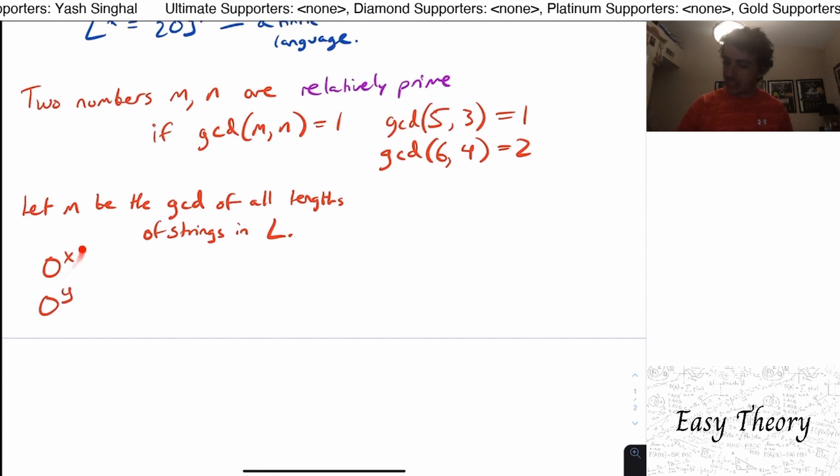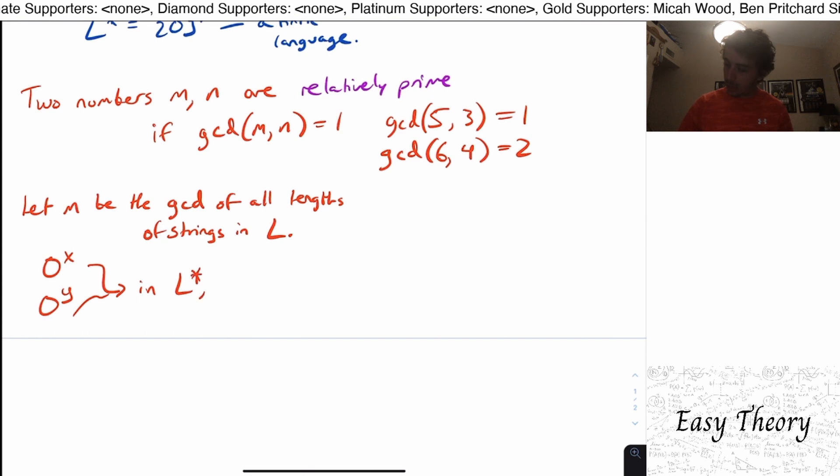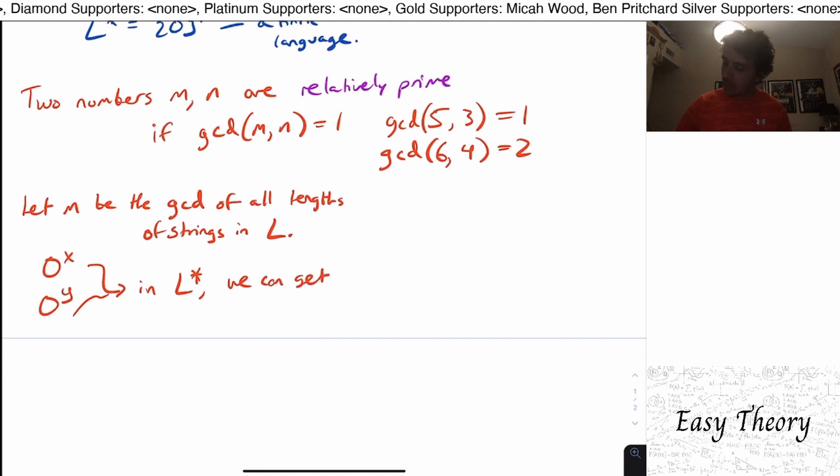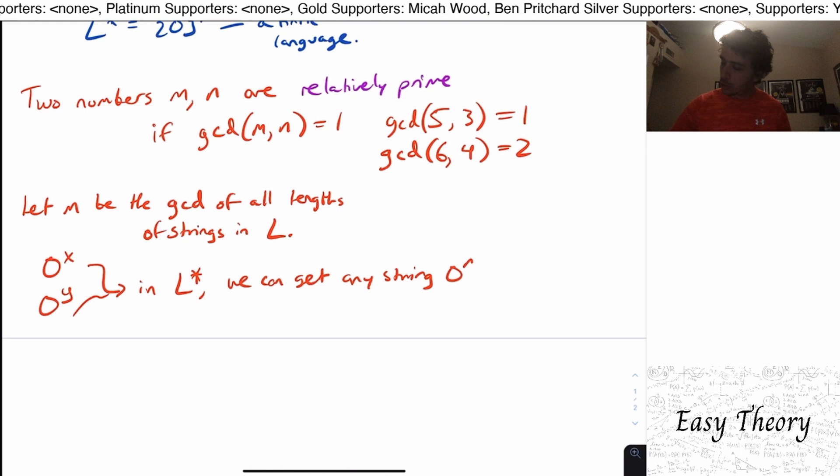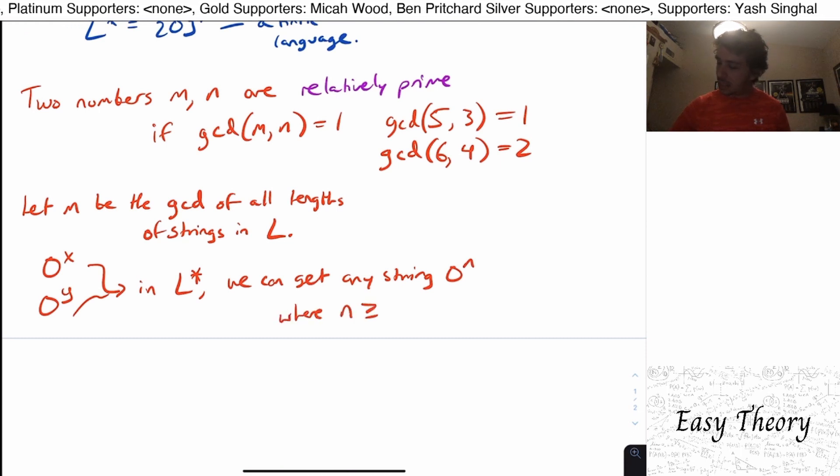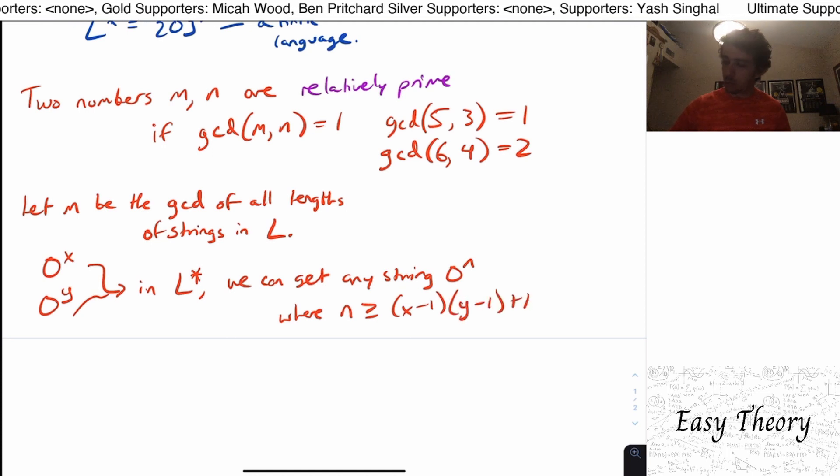But what we can think about is to try to combine two different strings. So let's say that we have zero to the X and zero to the Y. So this one has length X, this one has length Y. Then I claim that in L star, if we have these two strings right here, we can get any string zero to the N where N is at least X minus one, Y minus one, minus one.